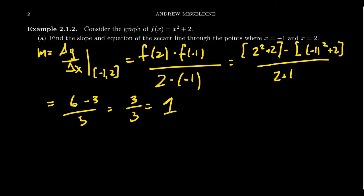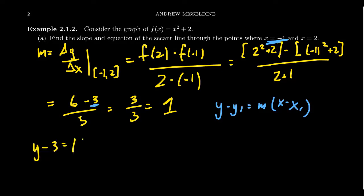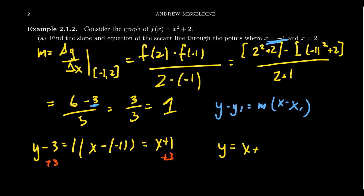Using point-slope form, y minus y₁ equals m times x minus x₁, with the point of tangency x equals negative 1 and y-coordinate 3, our line looks like y minus 3 equals 1 times x minus negative 1, which simplifies to y minus 3 equals x plus 1. Adding 3 to both sides, we get the slope-intercept form: y equals x plus 4. That is the equation of the secant line from negative 1 to 2.